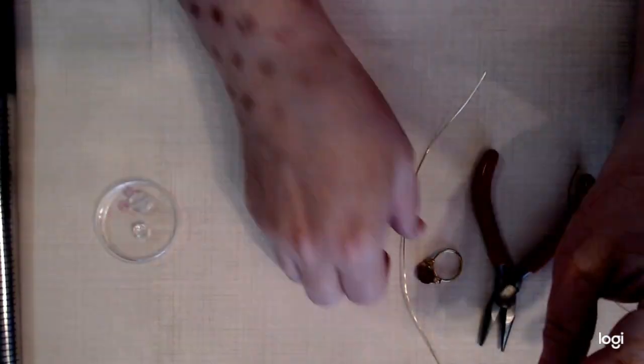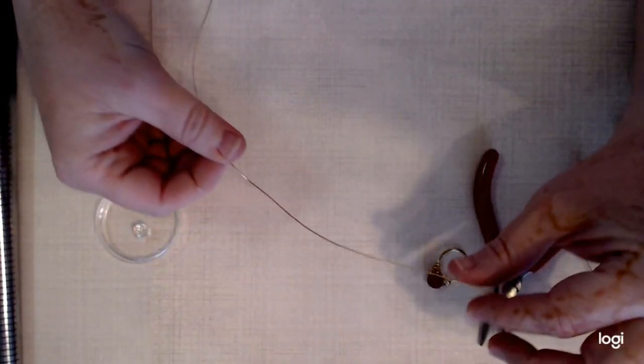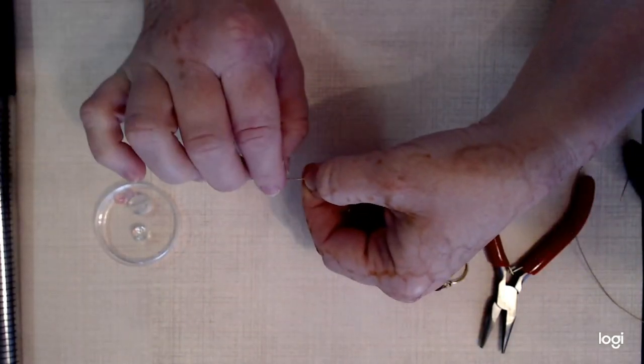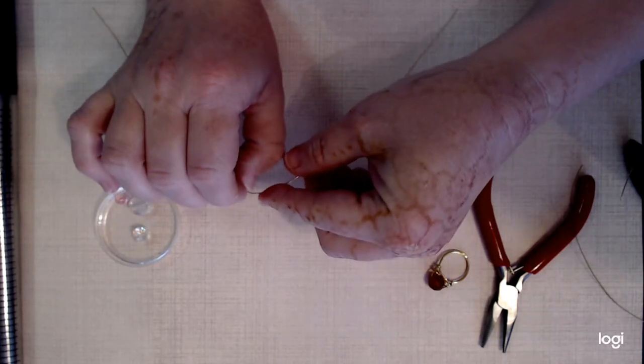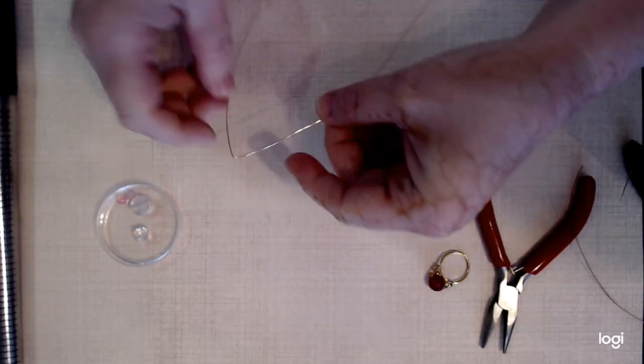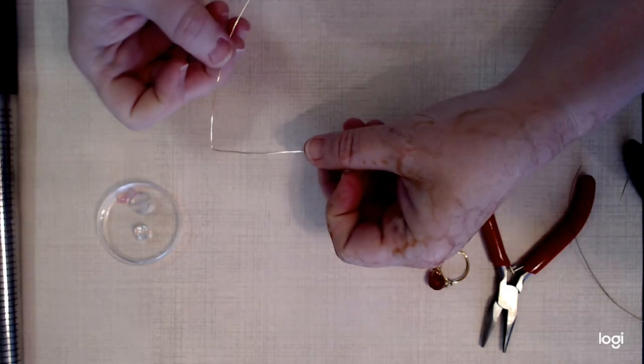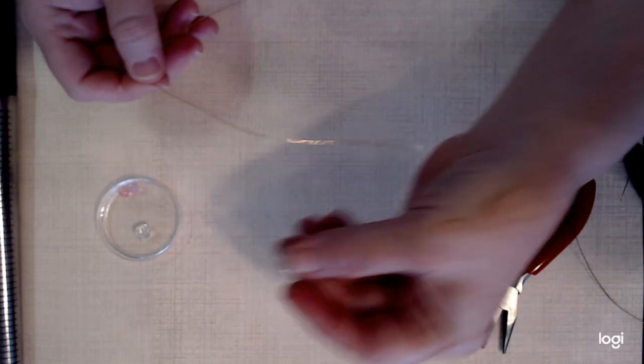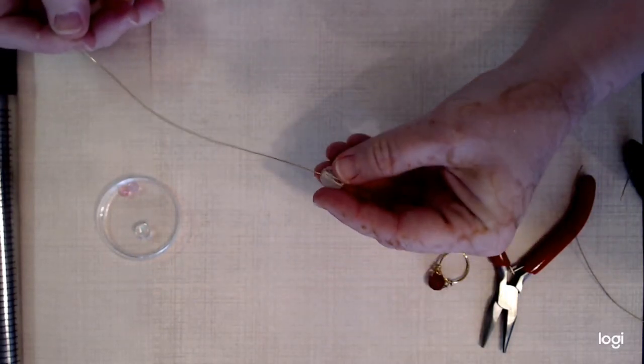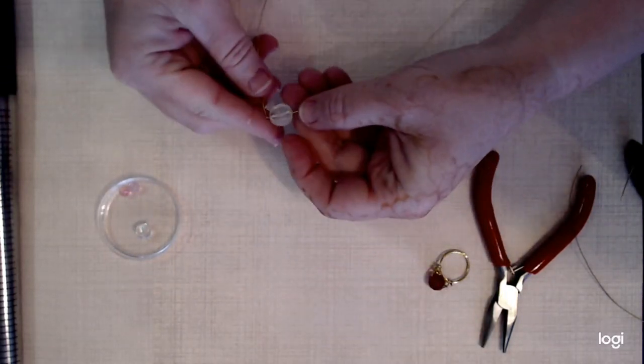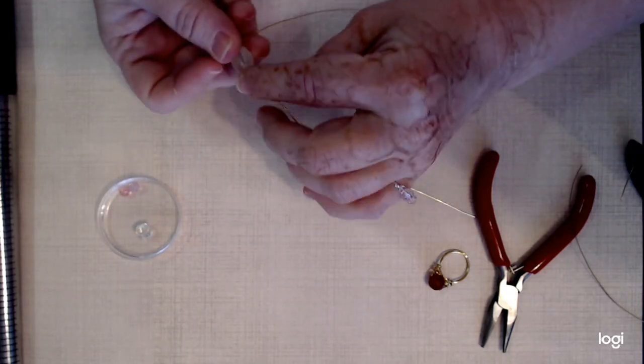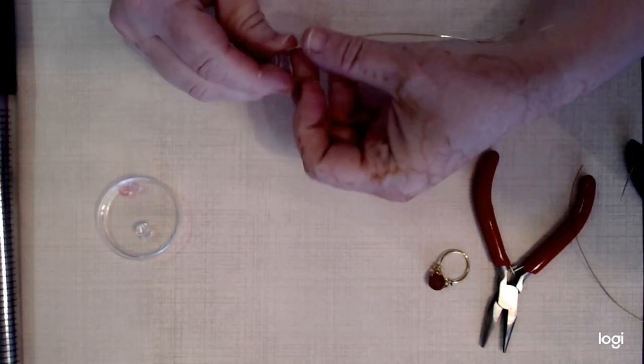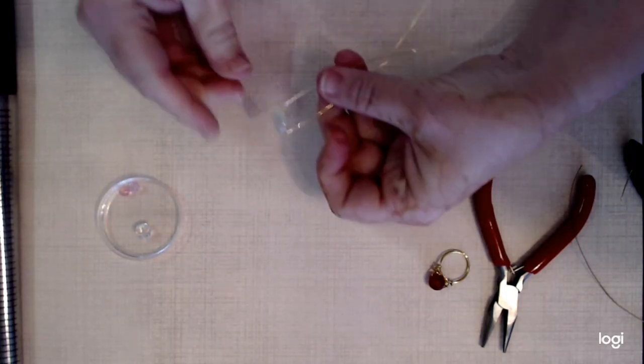We're going to get started here. You want to find the center of your wire and then a little bit off center, you'll want to make a little crimp, like a right angle. Then you take your bead and slide it on the longer side. Then you're going to want to flatten this out right next to the bead and kind of give it a little pinch.